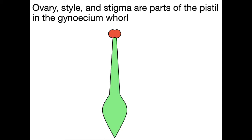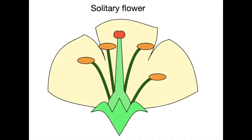The gynoecium houses what are thought of as the female elements of the flower. Plants aren't people — they aren't men and women — but we think of these as female parts. The ovary, the style, and the stigma are part of the pistil and are all part of the gynoecium. The stigma is at the very top of the style; the style is the stalk, and the stigma is the small double-round element on top. The pollen attaches to the stigma and then tunnels through the style to the ovary, where the eggs are, to form a seed for a new plant.